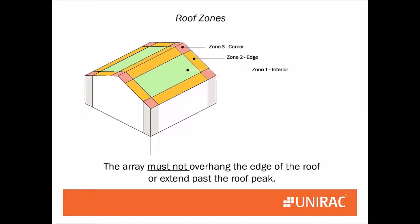Roof zones are about the additional turbulence created when wind hits the wall and either goes up to the edge of the roof or mixes from two sides in the corner. The minimum distance is 3 feet, and the actual distance is 10% of the entire width of the building. You may rack modules in roof zones 2 and 3 — edges and corners — but you may need to attach more often because of the greater turbulence.